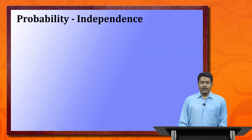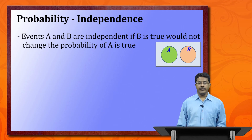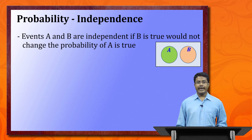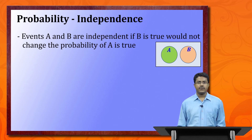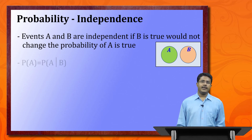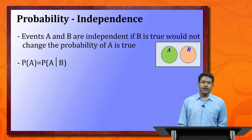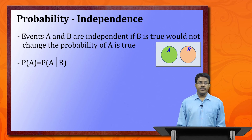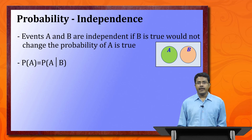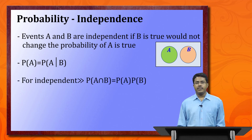Now we come to independence — whether two events are dependent or independent. Events A and B are independent if knowing B is true does not change the probability of A being true. Mathematically: P(A) = P(A | B). If this holds, A and B are independent. For independent events: P(A ∩ B) = P(A) × P(B).